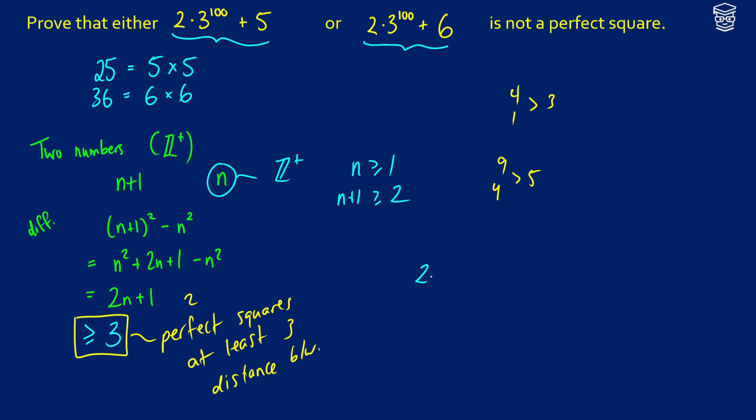But let's take a look at our equation. If we do 2 times 3 to the 100 plus 6, and we subtract 2 times 3 to the 100 plus 5, what do we get? We just get 1. The difference between these two numbers is just 1.